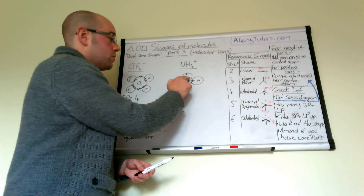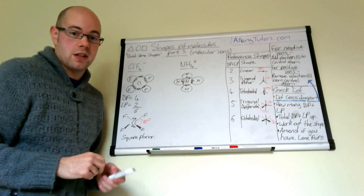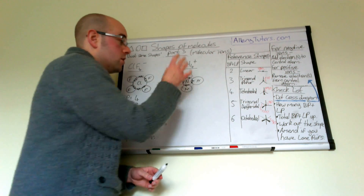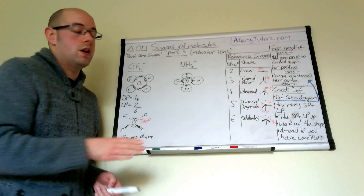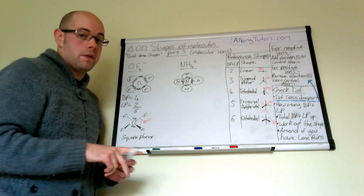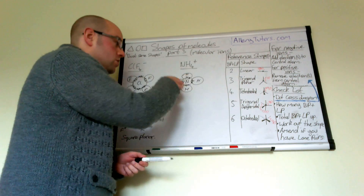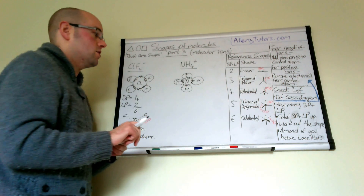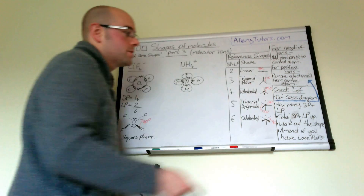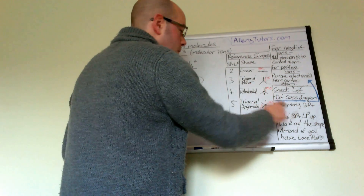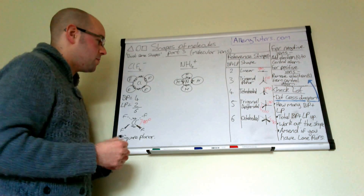Both electrons from nitrogen are actually donated to the hydrogen in the dative covalent bond. So this is purely just a model to help you work out the shape — chemically it doesn't actually exist in this form, just to make you aware of that.